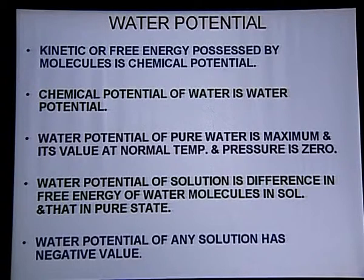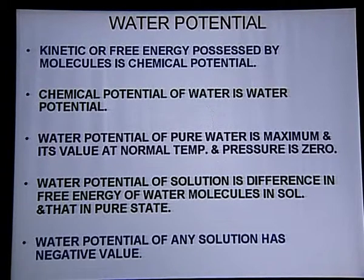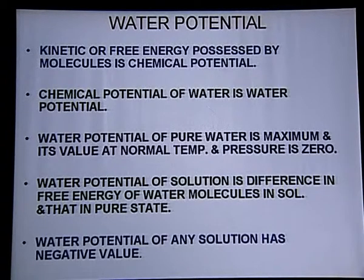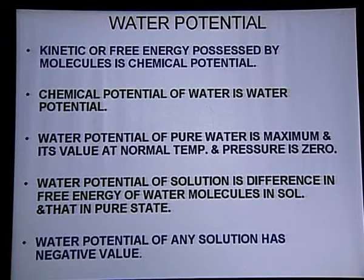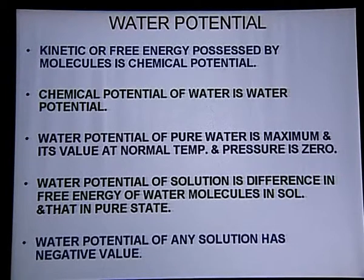Water will always move from higher water potential to the area of low water potential. Remember: water moves from higher water potential — what does low water potential mean? It means from a less negative state to a more negative state. For example, if the value is minus 1000, it will move towards minus 2000. So water always moves from higher water potential to the area of low water potential, from less negative to more negative state.